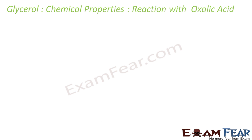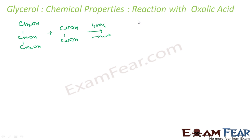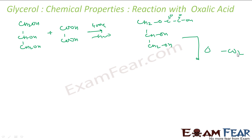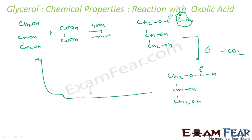Reaction with oxalic acid: glycerol reacts with oxalic acid at around 400 K, losing water to give an intermediate compound CH₂O. On reheating, CO₂ is lost. The product can undergo hydrolysis to regenerate glycol, bringing the process back to its starting material in a circular fashion.